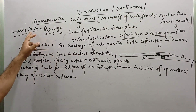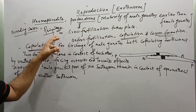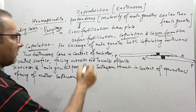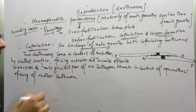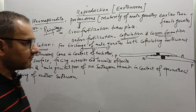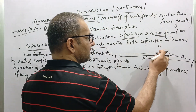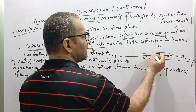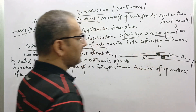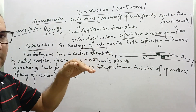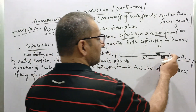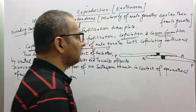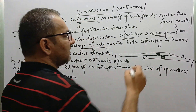Earthworms undergo copulation during the breeding season, which is the rainy season. Copulation is a process for exchange of male gametes between two copulating earthworms. The male genital pore slightly gets raised to form the male genital papilla, and that papilla is inserted into the spermathecal pore of the other earthworm. The male genital pore gets changed into a small outgrowth called the male genital papilla, which is then inserted.